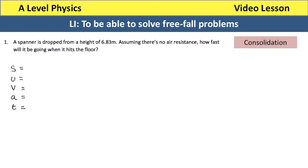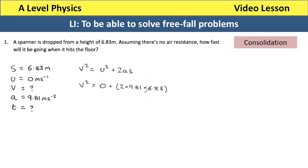Consolidation question one. A spanner is dropped from a height of 6.83 metres. Assuming there is no air resistance, how fast will it be going when it hits the floor? We write out SUVAT: S is 6.83, U is zero because it's dropped from rest, and the acceleration is 9.81 metres per second squared. We use V squared equals U squared plus 2AS and take the square root to find V. So we do root of 2 times 9.81 times 6.83 to give a final answer of 11.6 metres per second.